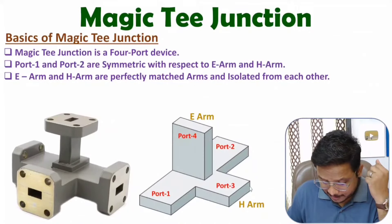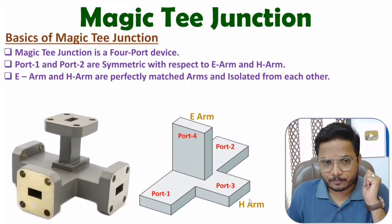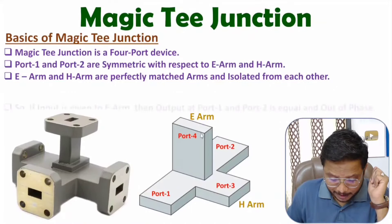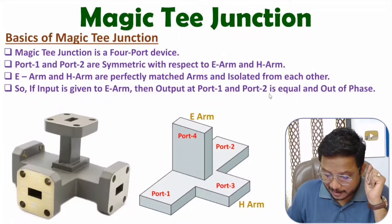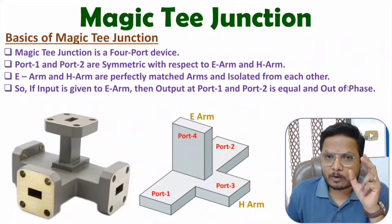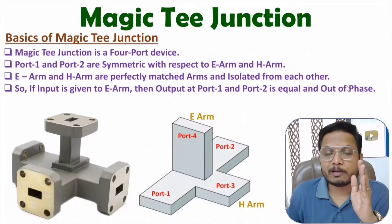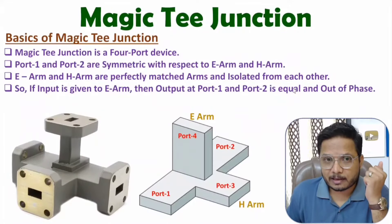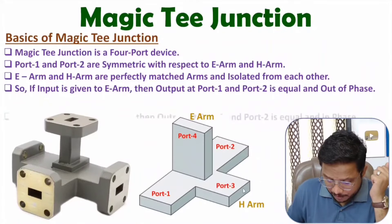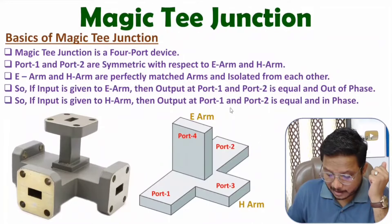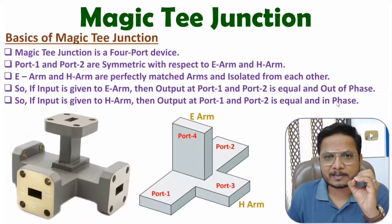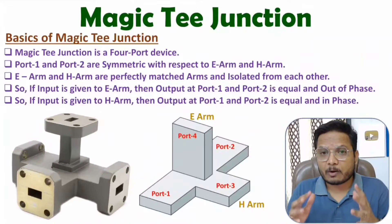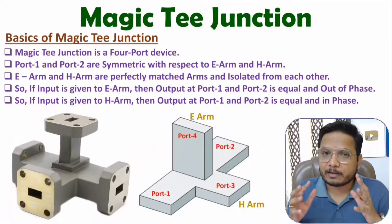Since Magic T is a combination of E-plane T and H-plane T: if you give input at the E-arm, the output at port 1 and port 2 is equal in magnitude but 180 degrees out of phase. If you give input at the H-arm, the output at port 1 and port 2 is equal in magnitude and in phase, with zero degree phase shift. That is the basic working and structure of Magic T junction.